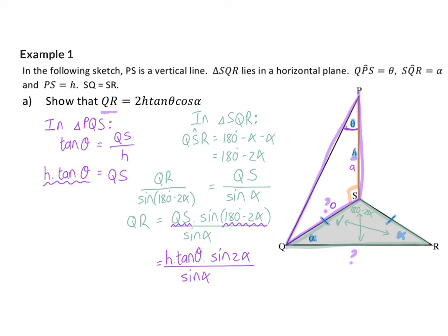And lastly, I need to realize that sin 2 alpha is a double angle that I have an identity for. I can substitute it with the identity to sin of alpha times cos of alpha. When I now simplify sin alpha divided by sin alpha, I'm left with what I had to prove.